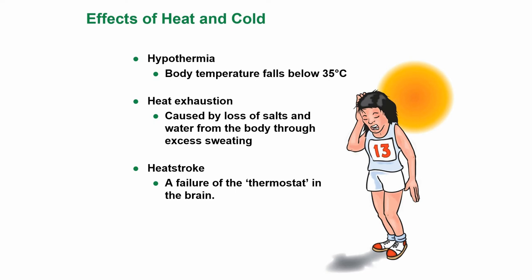The effects of heat and cold. 'Hypo' means too little heat. So hypothermia is when body temperature falls below 35 degrees C — it should remain at 37 degrees C. Heat exhaustion is caused by loss of salts and water in the body through excess sweating. And heat stroke is a failure of the thermostat in the brain.